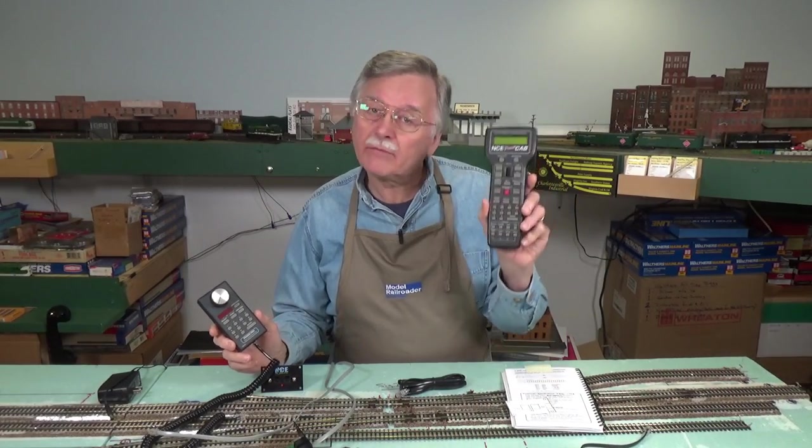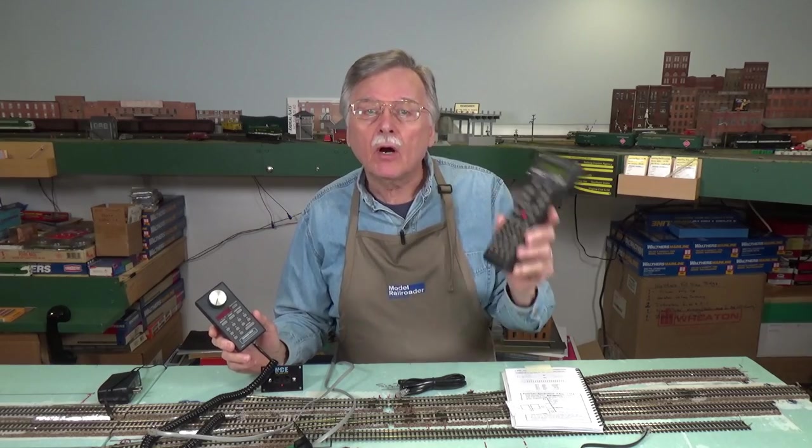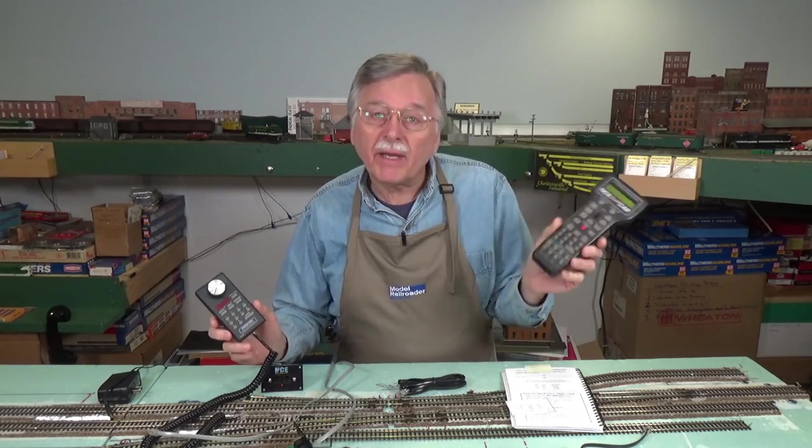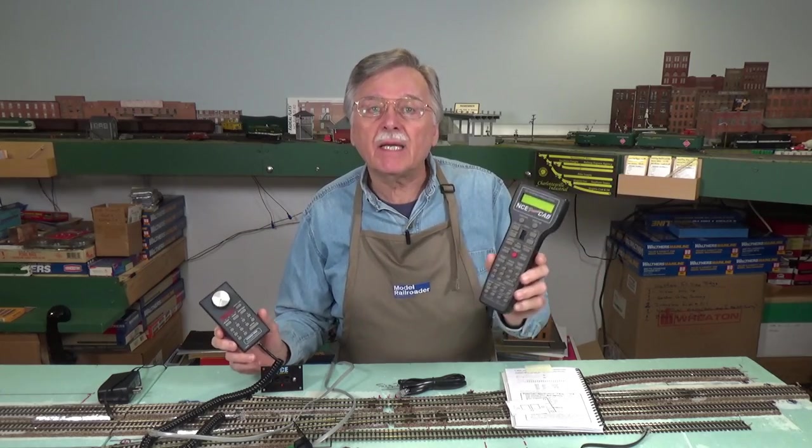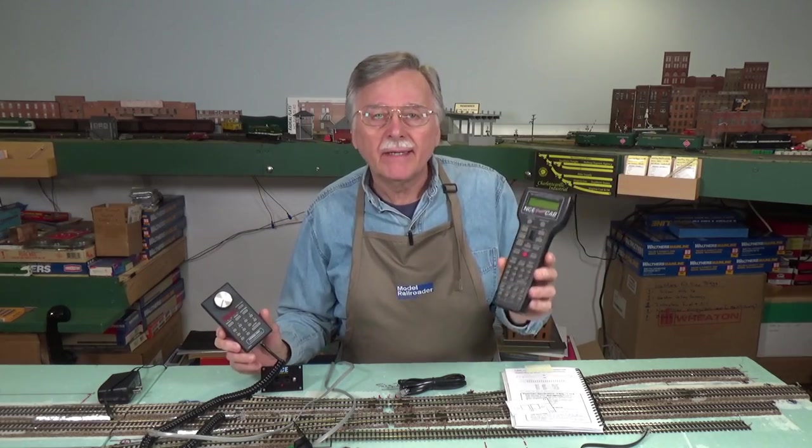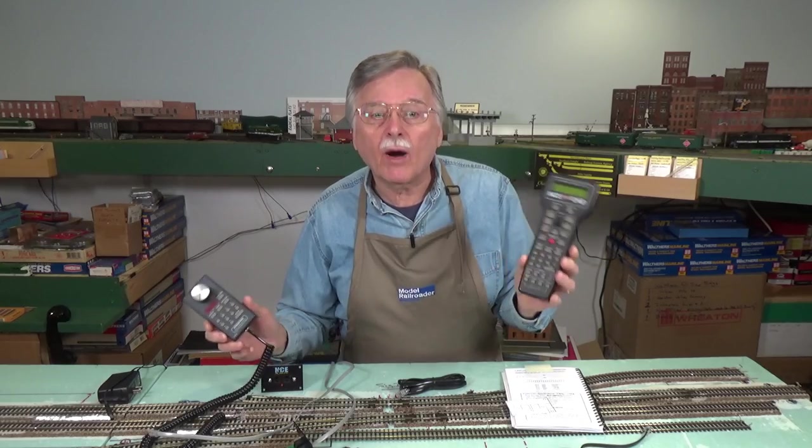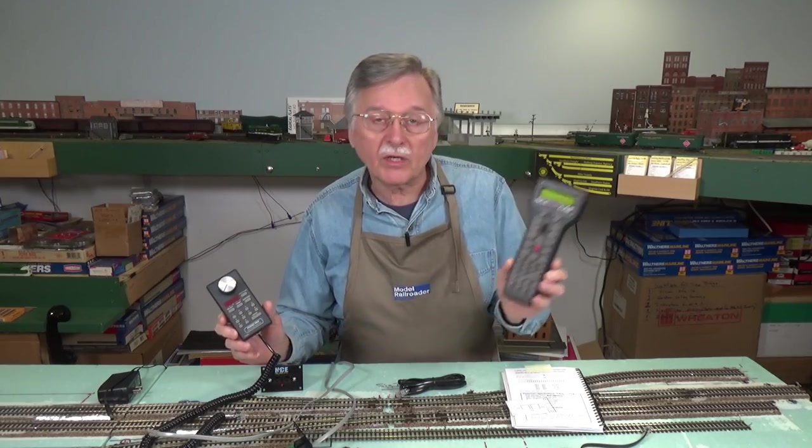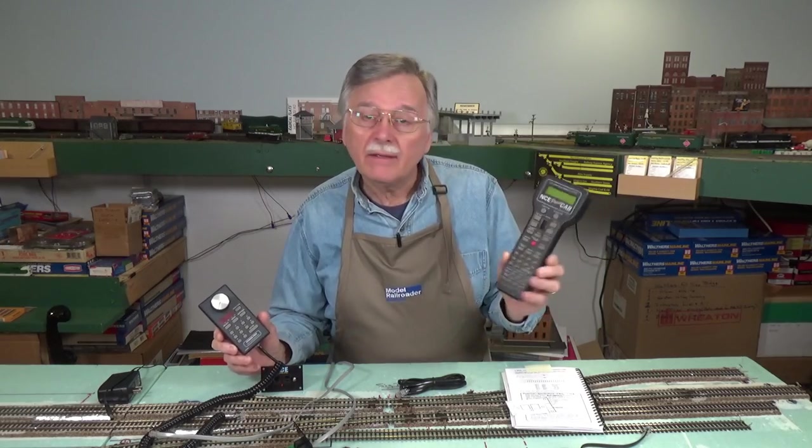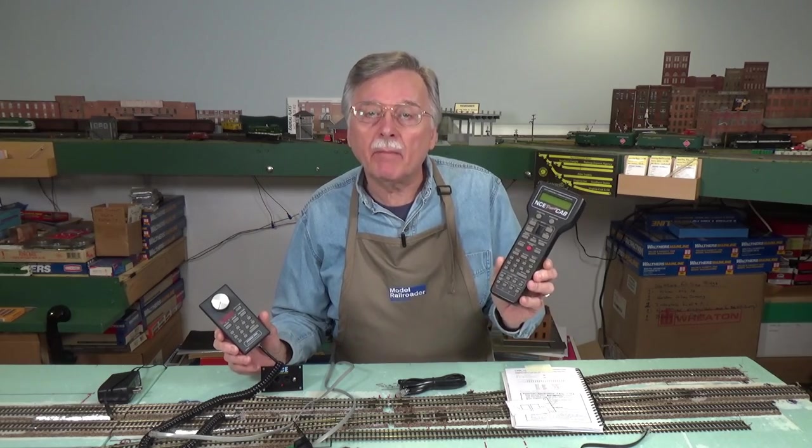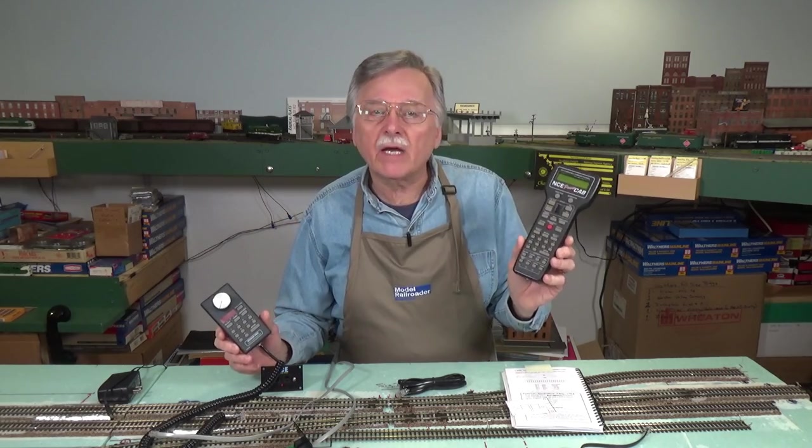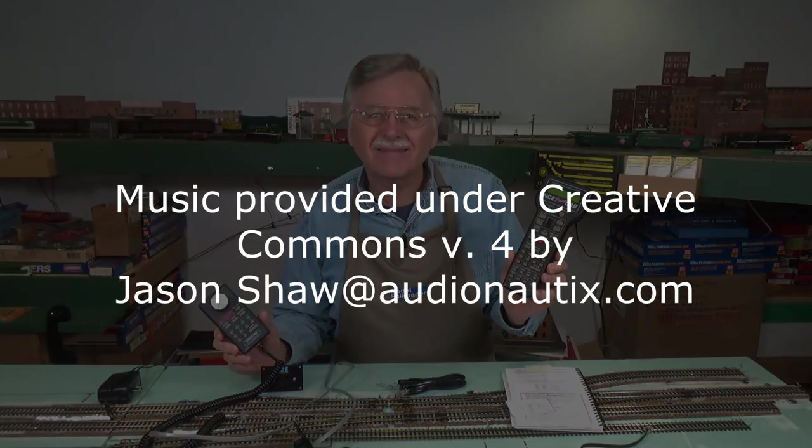Well, that's a wrap for today's video. I hope that fills you in on how to install an NCE DCC system on your model railroad. And to be honest with you, you can use the same approach for just about any of the major brands that I'm aware of. It's primarily just hooking up two wires and going once you get the basic wiring done. So that's it, and have a great weekend. We'll see you here again on Monday with another new video from the DCC Guide. Bye.